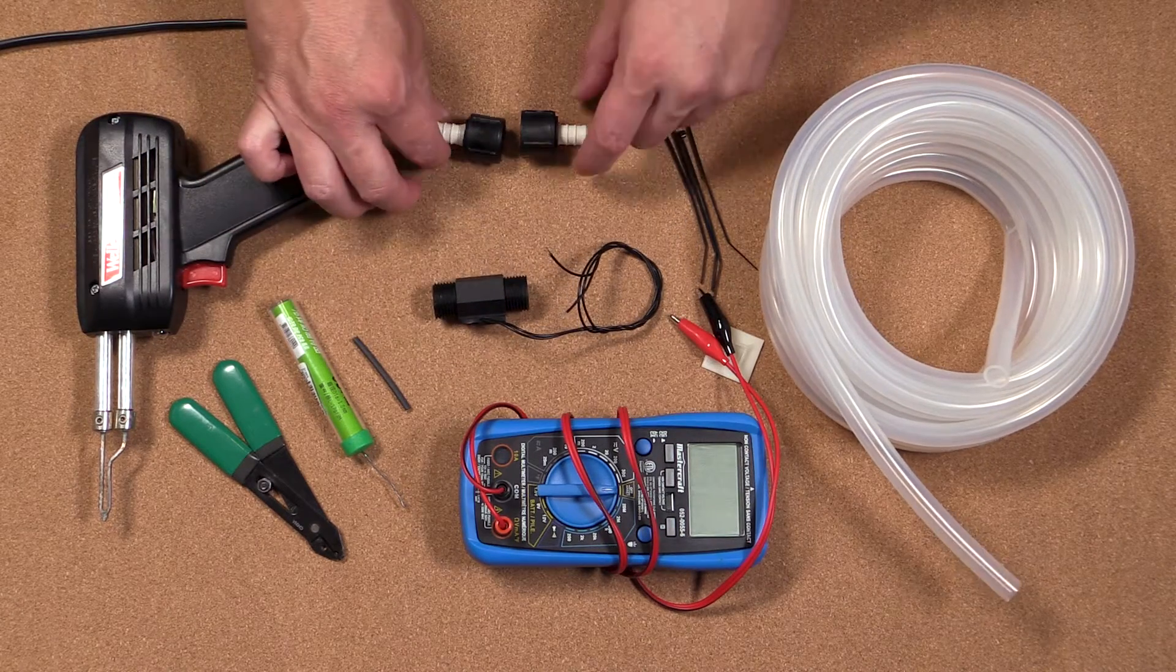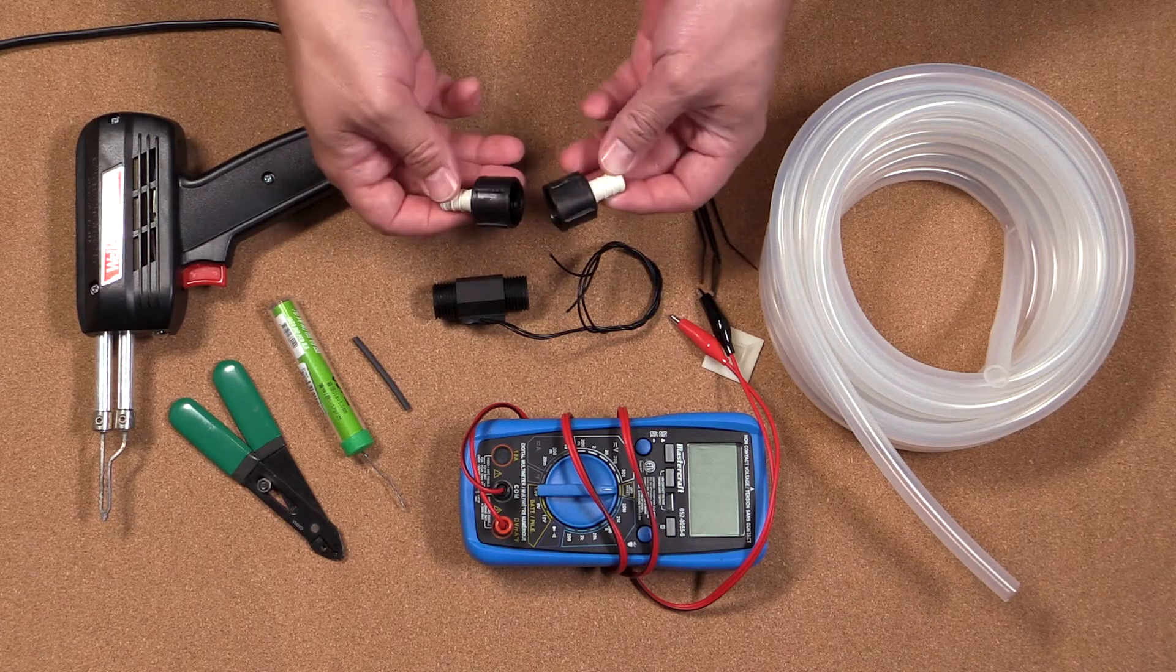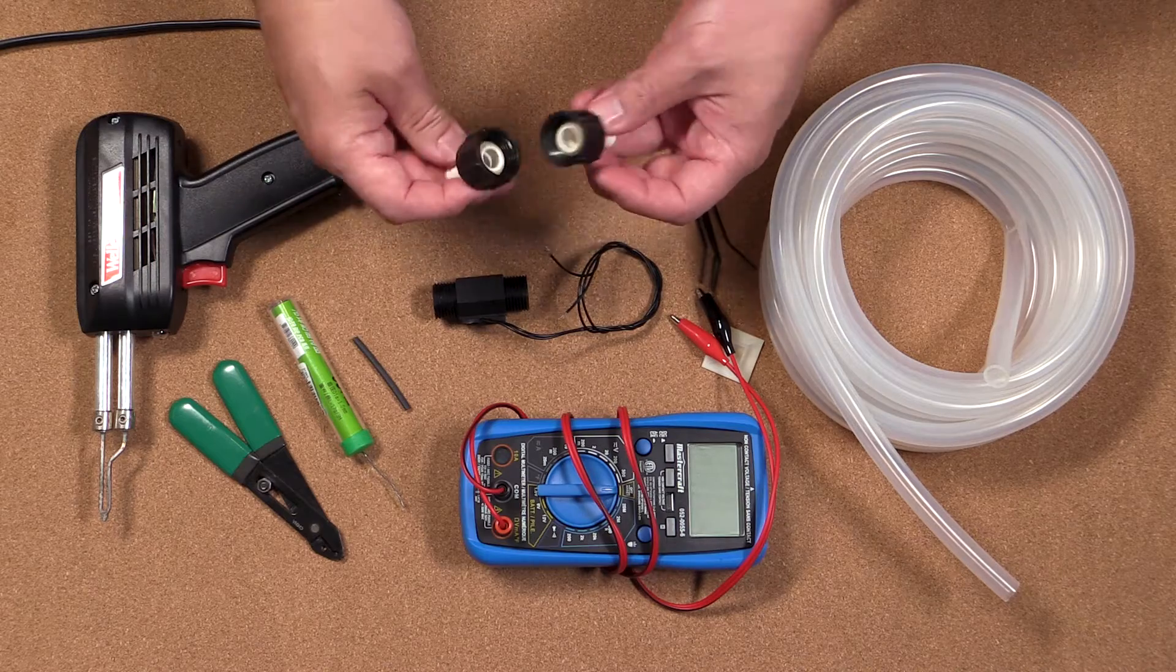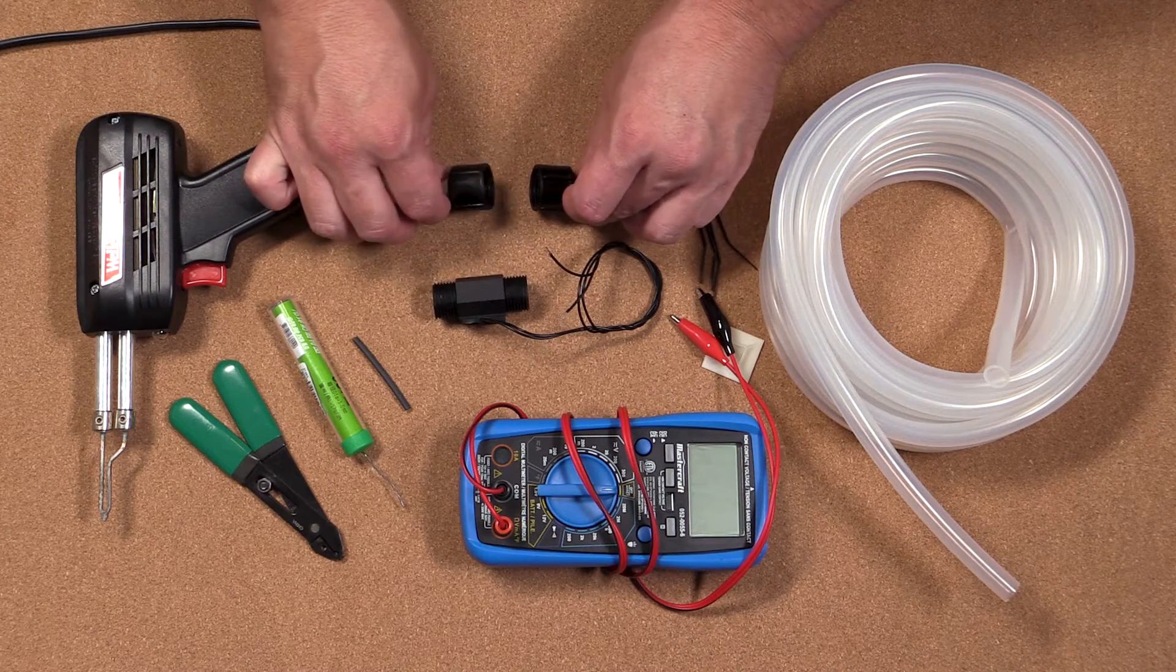The water flow switch I have has half inch pipe thread on it. So I'm going to need some reducers that go from half inch pipe thread to three-eighths barbed for the size of hose I'll be putting on them.